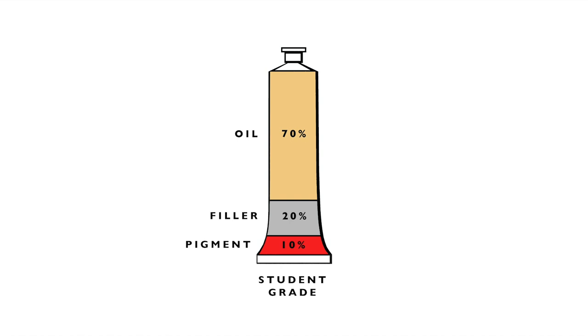Student grade paint will contain the least amount of pigment, often as little as 10%. The rest of the paint will be made up of oil and other fillers. Most oil colours are made with linseed oil, but sometimes other oils are used, like safflower oil or walnut oil. Because student grade paints contain so little actual pigment, their tinting strength is much less than better quality brands and they're also much more oily. Of all the different kinds of student grade paint I've used, probably the best is the Winton range by Winsor & Newton.